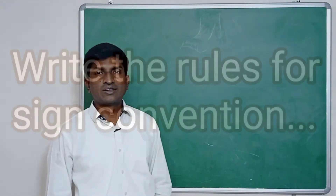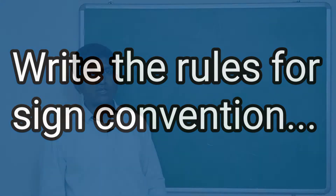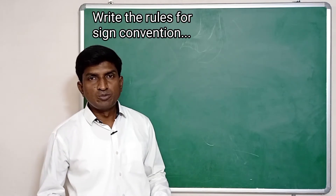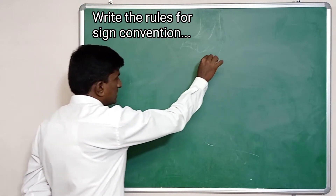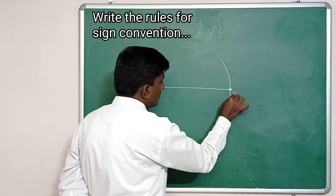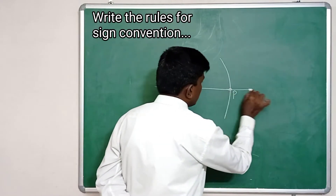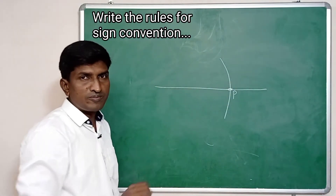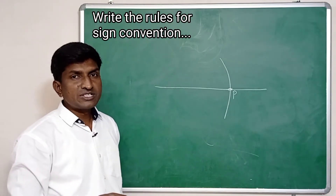Welcome students. Write the rules for sign convention. The first sign convention: all distances should be measured from the pole. Whatever the distance — object distance, image distance, or any other — it must be measured from the pole. We need to start from the pole. This is the first sign convention.